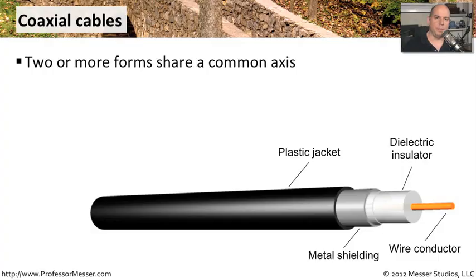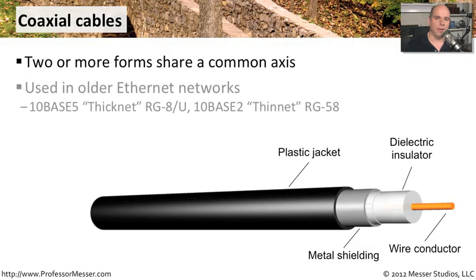Coaxial cables are named because there are two or more forms of a common axis. In a coax cable, you have a single copper wire running right through the middle. We've been using cable like this for a long time — tens of years in networking. There's TenBase 5, which we used to call ThickNet, using RG8U. There's TenBase 2, and even ThinNet, which is an RG58, a much thinner coaxial cable.